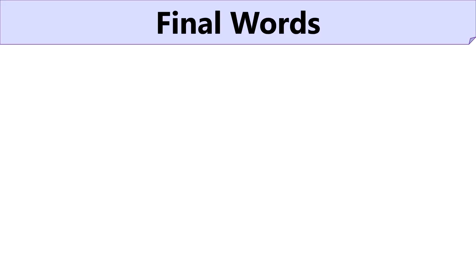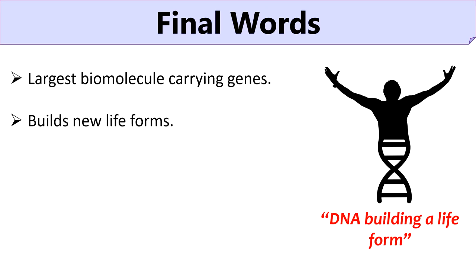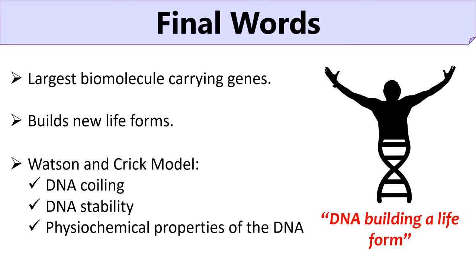To conclude, DNA is the largest and most complex biomolecule which carries the genetic information of a person to build a new organism or a new life form. Watson and Crick proposed a DNA model in the year 1953 that explains DNA coiling, DNA stability, and the physicochemical properties of DNA. To study this topic in detail, you may visit our official website at biologyreader.com — the link is provided in the description box.